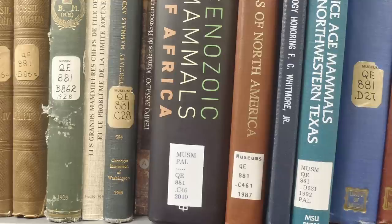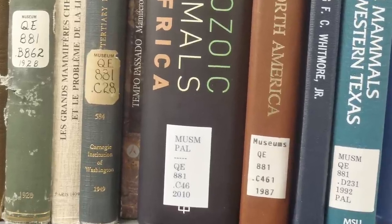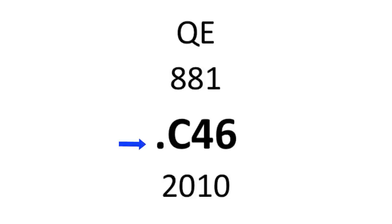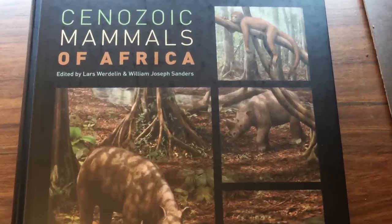If lots of books have call numbers starting with QE 881, look at the third line of the call number, which librarians call the cutter line. This third line has a decimal point, then a letter, then one or more numbers. The letter usually indicates either title or author. For this book, the C is for Cenozoic. On the shelf, look for the letter first, then for the numbers.